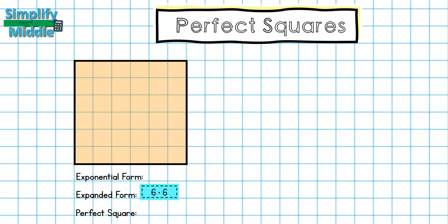Because it has been repeated twice, I know that the exponent here is going to be 2 and the base is going to be 6. So this is 6 squared. And if I were to multiply together 6 times 6 to find the area, I would see that I have a perfect square of 36.